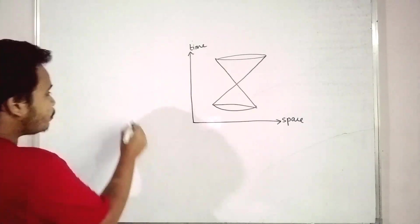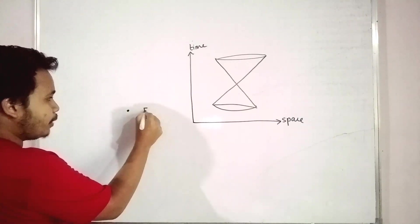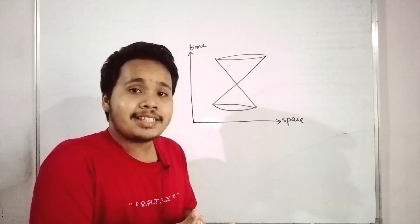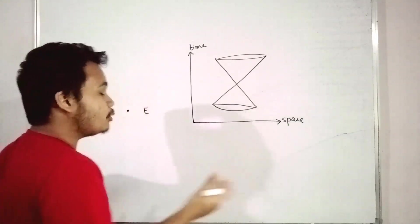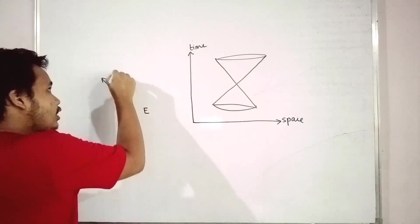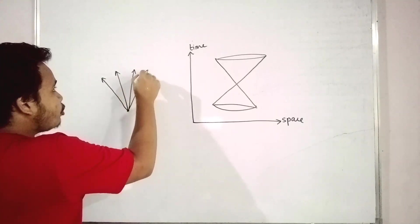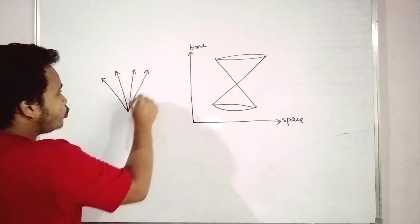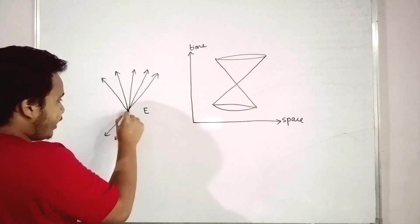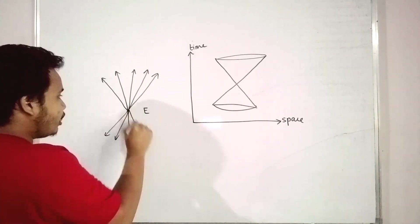Let me make it more simple. Suppose we are considering an event E here, where from a source of light we are emitting light. As you know, light travels in all directions. Now if we consider it in two ways — an upward direction and a downward direction — we will get something like this.